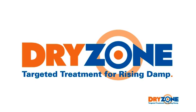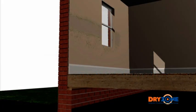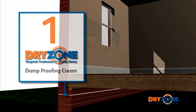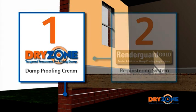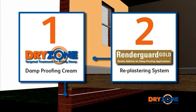The dry zone system comprises of two essential elements. The patented dry zone damp-proofing cream, which forms a barrier to moisture rising from the ground, and a salt-resistant re-plastering system that isolates salt contamination that is built up within the wall structure, preventing damage to paintwork and decor.